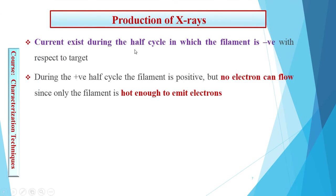The current exists during the half-cycle in which the filament is negative with respect to the target. During the positive half-cycle, the filament is positive, but no electrons can flow since only the filament is hot enough to emit electrons. When the filament is heated sufficiently, it has the capability to emit thermionic electrons. So during the negative half-cycle we obtain electrons directly, and we can also obtain some electrons during the positive half-cycle due to the hotness of the filament — not due to the positive cycle itself. In the positive half-cycle, only heat is responsible for electron emission.